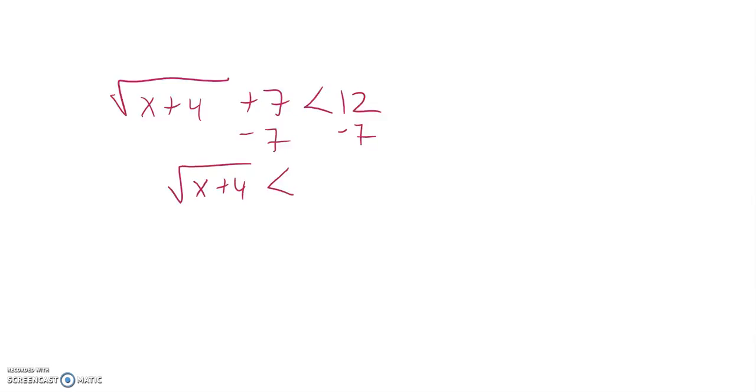12 minus 7 is 5. Square root of both sides. Subtract 4.